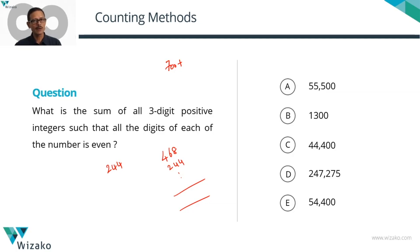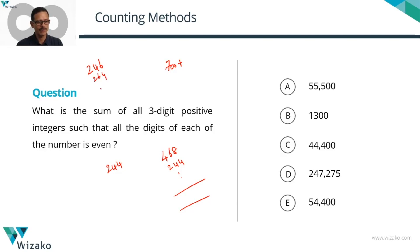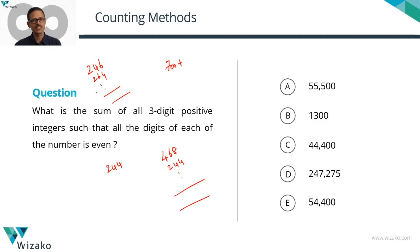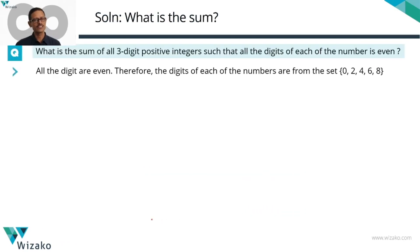We'll approach this question in two broad steps. The first step is to find out how many such numbers exist. If you've done easier variants of this — for example, finding the sum of all three-digit numbers formed by reordering the digits of 246 — that's straightforward. Here, we have many more numbers, so let's first find out how many three-digit numbers exist where all digits are even.